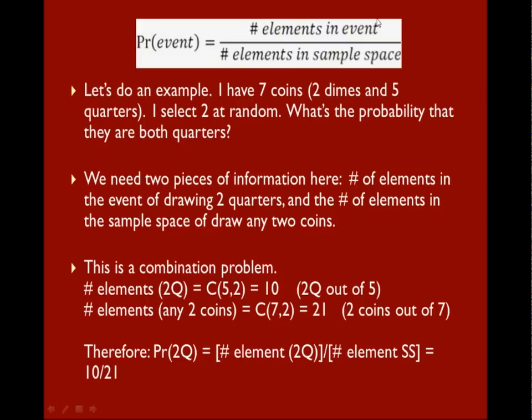We need two pieces of information: the numerator, which is the number of elements in the event, and our event is drawing 2 quarters. The denominator is the number of elements in the sample space, which is the number of ways to draw any 2 coins.